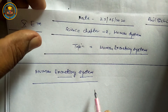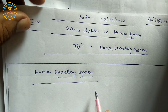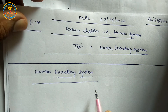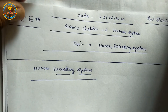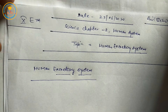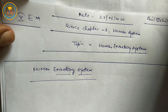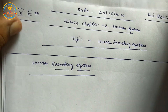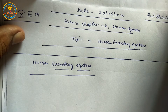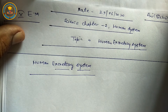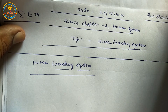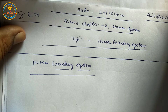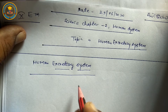First of all, I will draw a figure of the Human Excretory System. Humans have one pair — it means two — kidneys. They are the main or primary excretory organs.